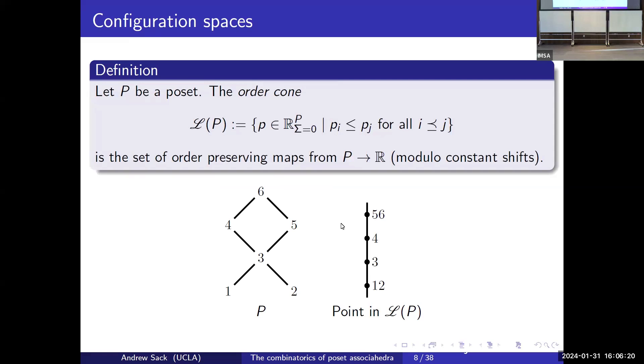One of my results that I'm going to talk about today is a realization of poset associahedra. Galashin showed that these were convex polytopes by doing sedentary divisions of the polar dual, but I provided an explicit realization. For a poset, we can define the order cone as the set of order-preserving maps from the poset to R, and then we have an extra condition which says that all the coordinates sum to zero. Or we can think of this in maybe a more natural way as modulo constant shifts.